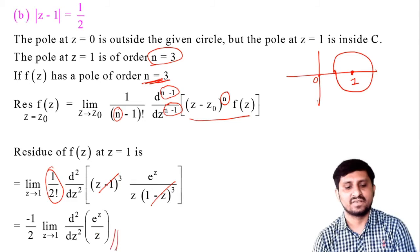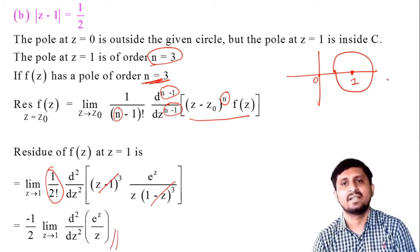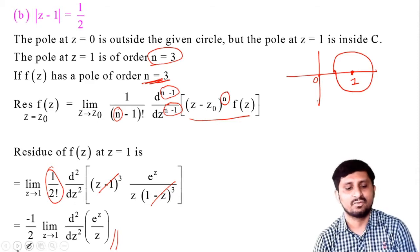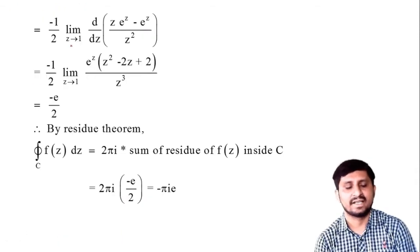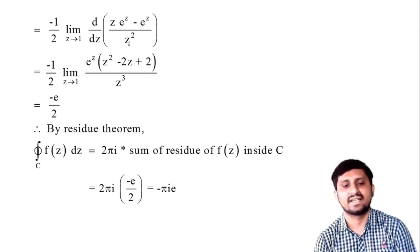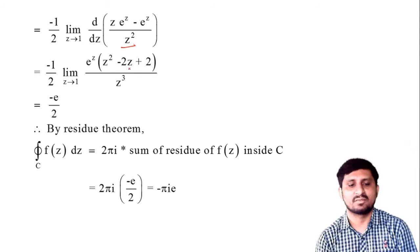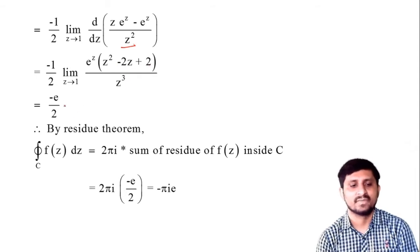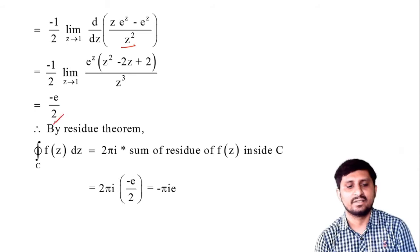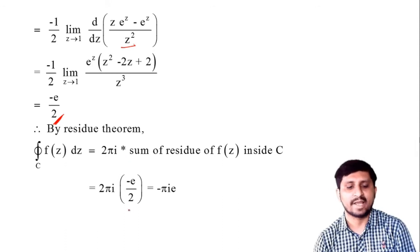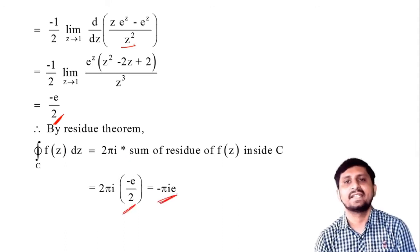We differentiate e^z/z twice. The first derivative using the quotient rule gives [ze^z − e^z]/z² = e^z(z−1)/z². Differentiating again gives e^z(z²−2z+2)/z³. Substituting z=1, we get e(1−2+2)/1 = e. So the residue is −1/2 · e = −e/2. By the residue theorem, the integral equals 2πi × (−e/2) = −πie.